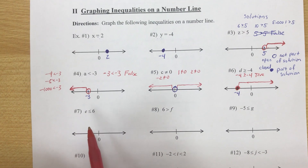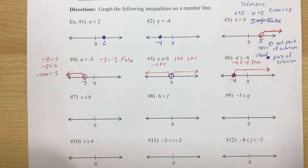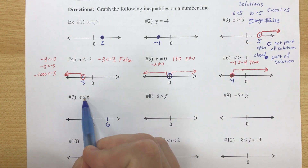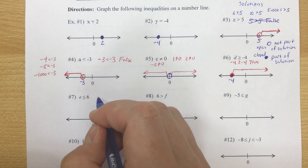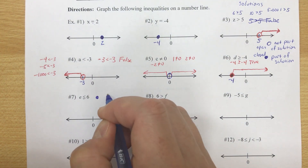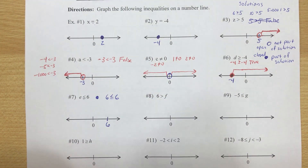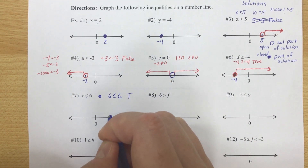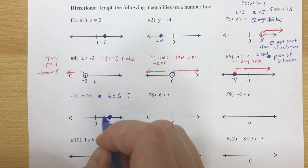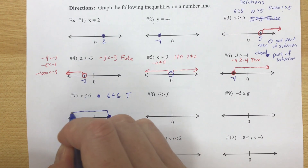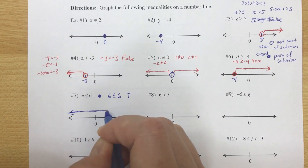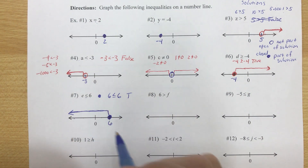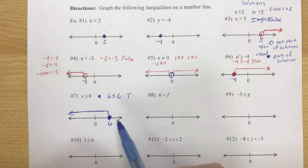Number 7: e is less than or equal to 6. Positive 6 is over to the right. 'Less than or equal to' gives us a closed circle, because 6 is less than or equal to itself — that's true. So I close the circle and draw the arrow to the left. All values less than 6: 5, 4, 0, negative 10, negative 20 — those are all less than or equal to 6.